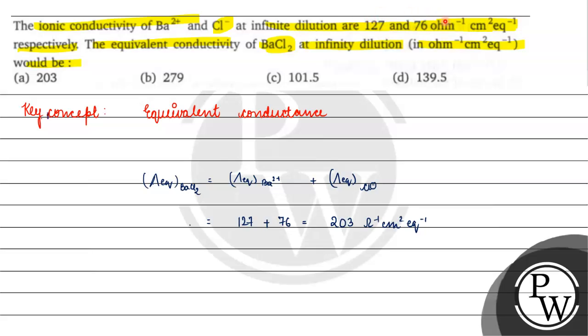So, we don't need to change it. We will directly use these values. You get 203 ohm inverse centimeter square equivalent inverse. The correct answer for this question will be option A. I hope you understood it well. Thank you and all the best.